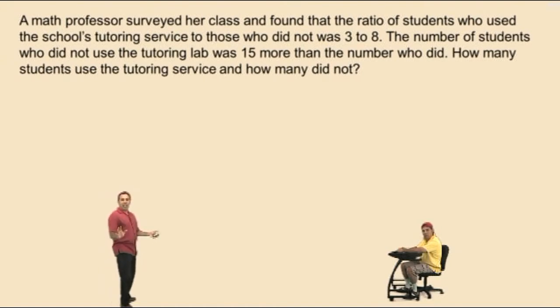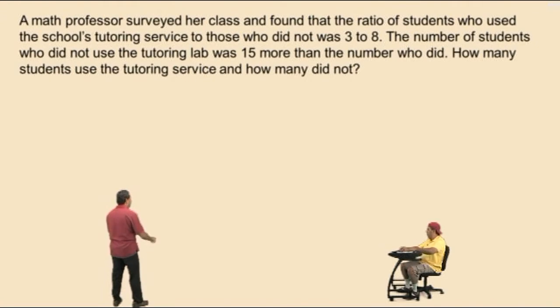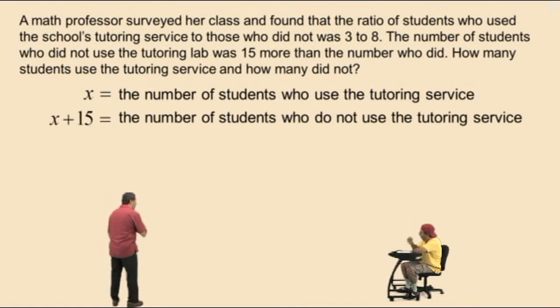Okay, just relax. Let's begin by letting x represent the number of students who use the tutoring service. Since we were told that there are 15 more who do not use the service, we can say x plus 15 is equal to the number of students who do not use the tutoring service.